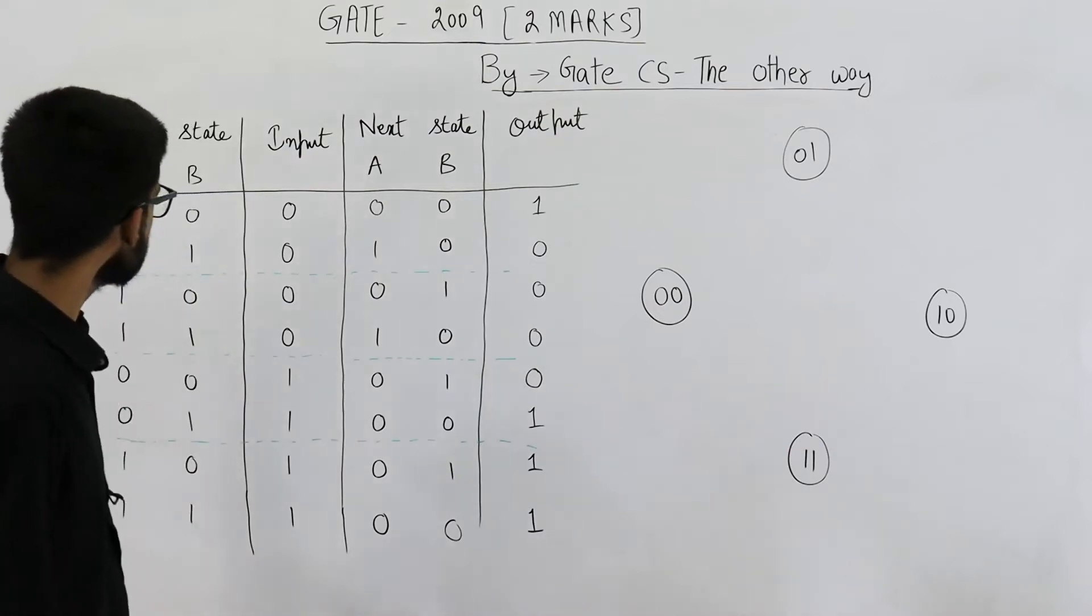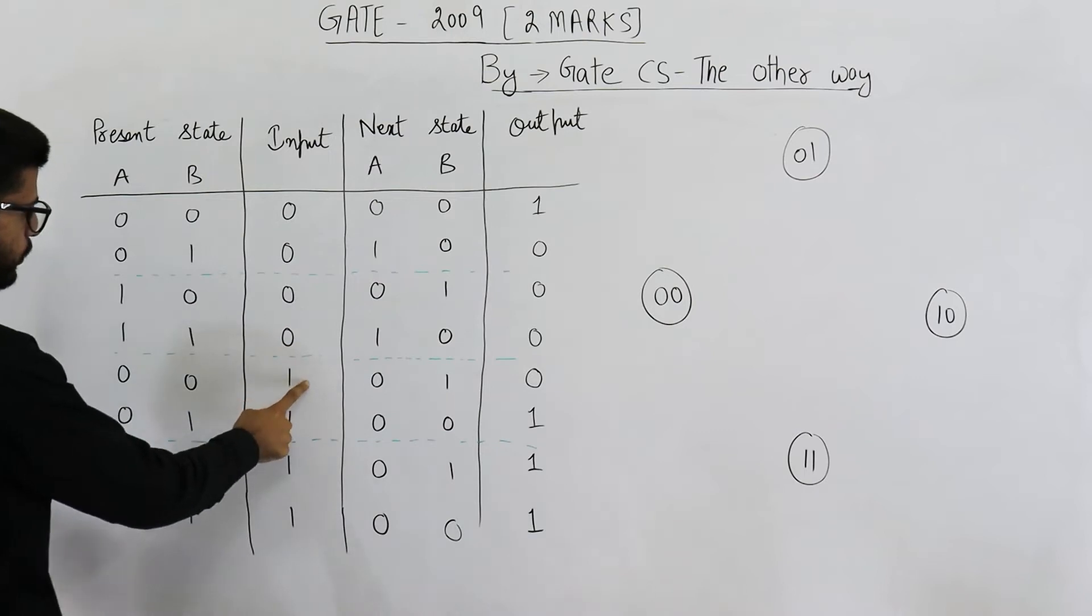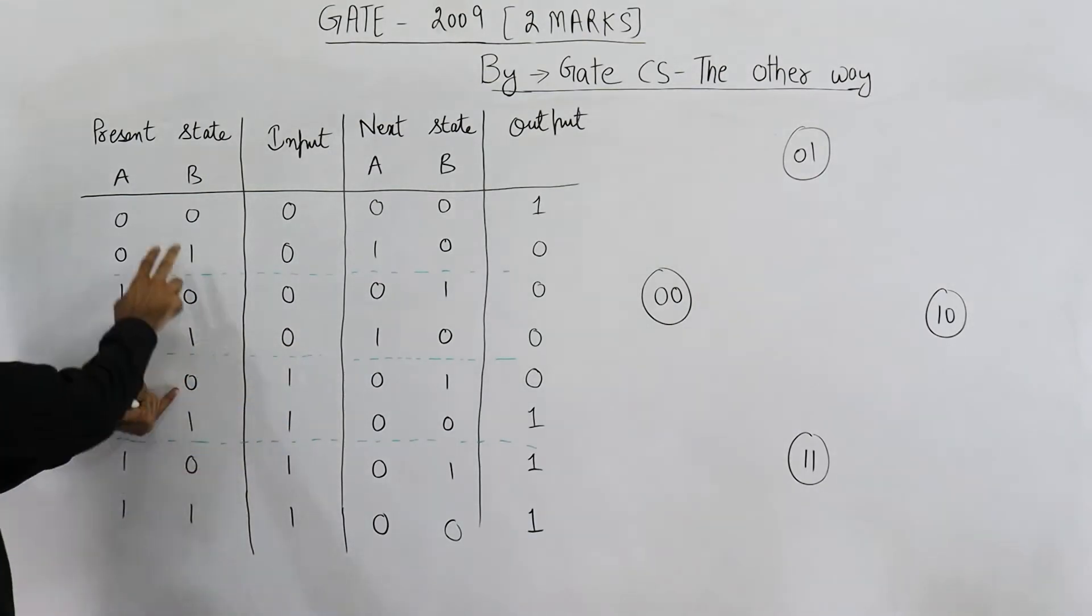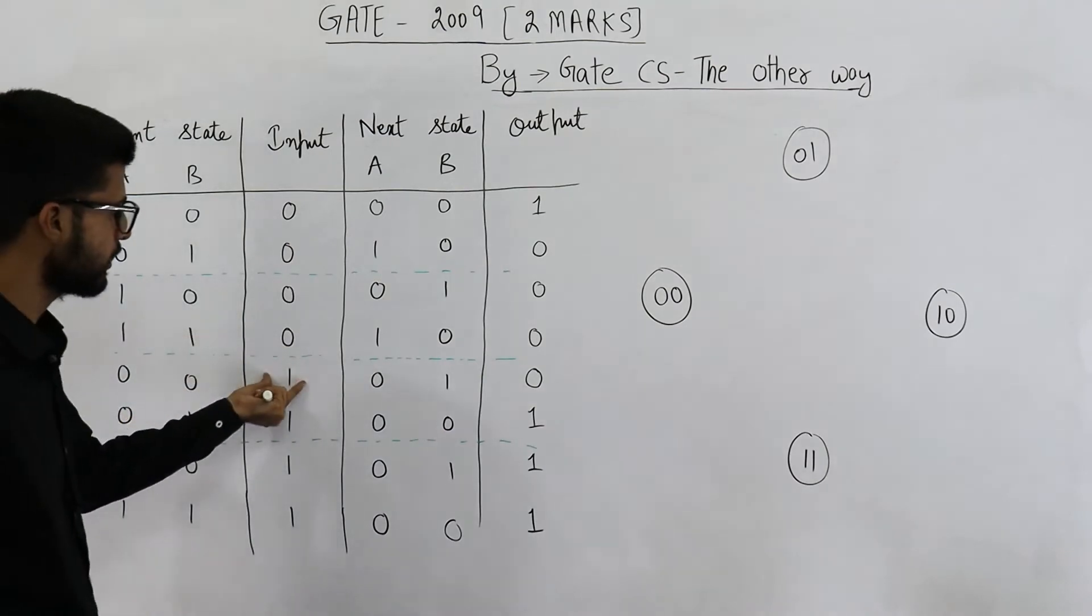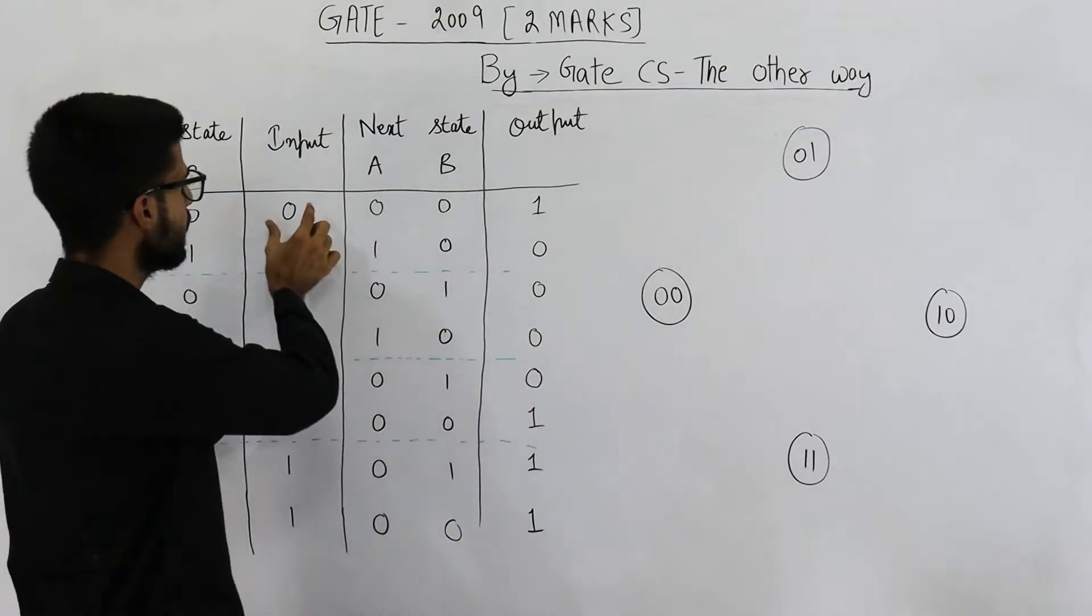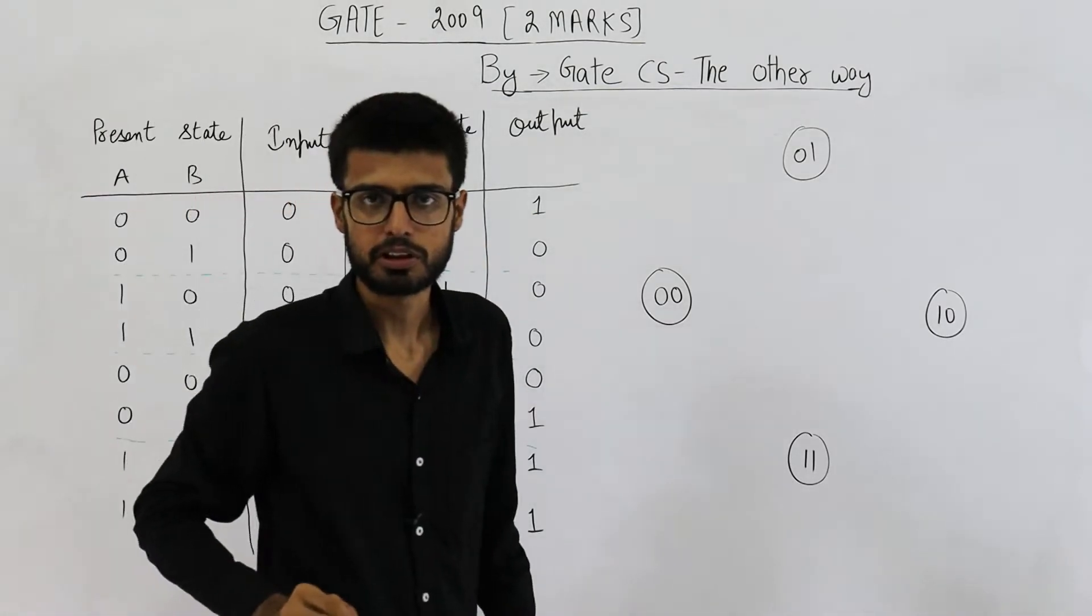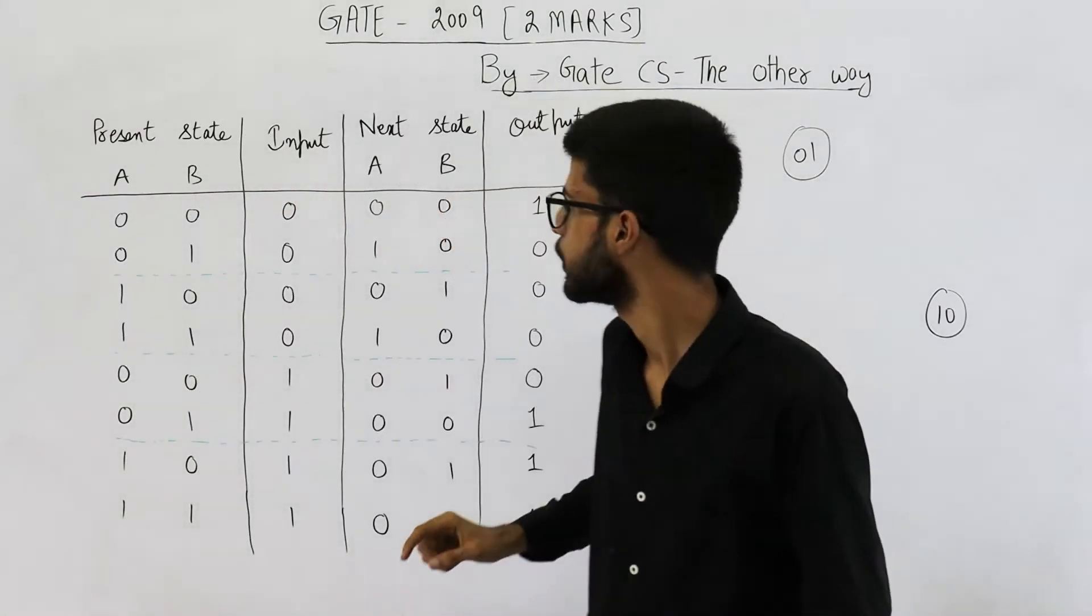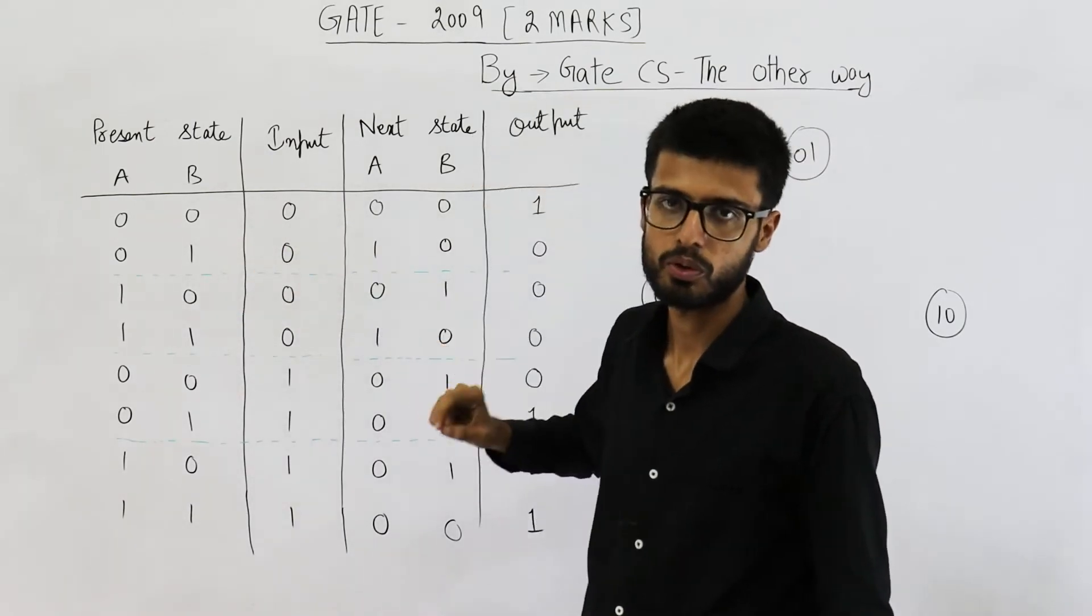But if on state 0,0, input is 1, this is state 0,0. This is for input 0. This is for input 1. In this case, output is 0. In this case, output is 1. That means it is a Mealy machine. Because in Mealy machine, output is determined by the current state as well as the input.